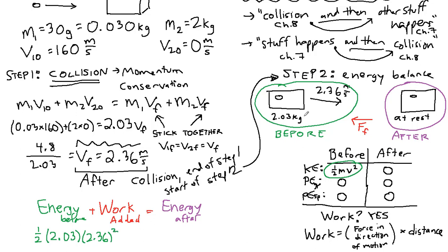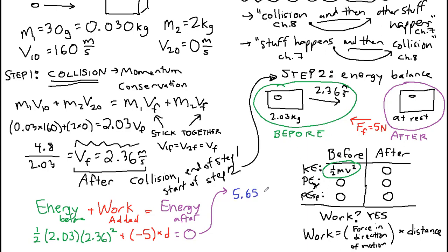And then the work term, force in the direction of motion, it's five newtons but it's opposite the motion, so we have negative five times our unknown distance d. And then if we look at the whole column on the right side of the after situation, all of that is zero. All right, so I can simplify this. And so the energy before term, the kinetic energy, we can get a value for in our calculators. On the left we have 5.65 minus 5d equals zero. We can add 5d to both sides and then divide by 5, and we get our final answer of 1.13 meters is our distance that we're looking for.